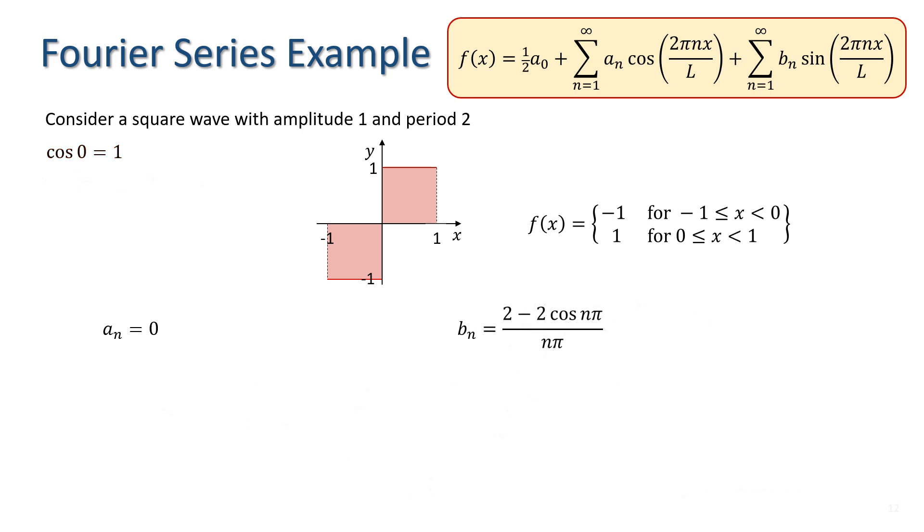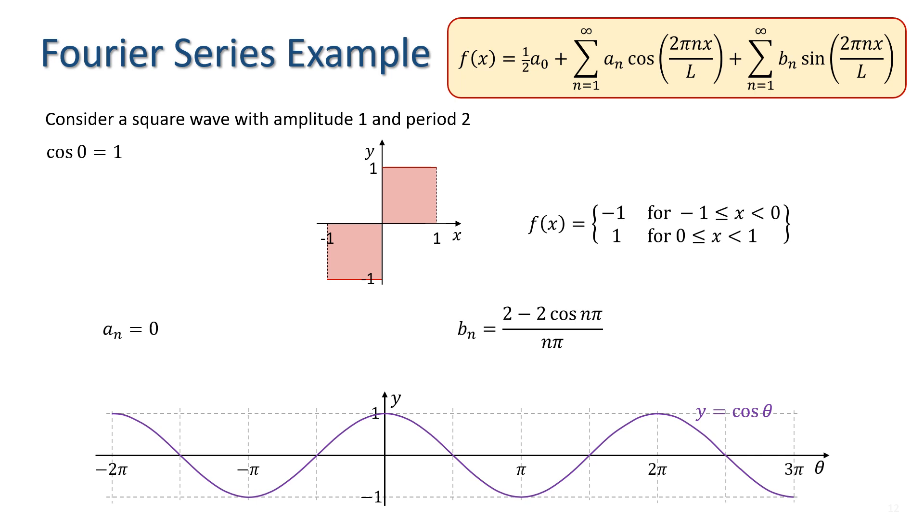Let's think about the cosine function. Well, cos of 0 is 1 and cos of pi is minus 1. The cosine function then repeats so that cos of 2 pi is 1 and cos of 3 pi is minus 1 and so on. We can see that cos of n pi equals 1 when n is an even number and minus 1 when n is an odd number.